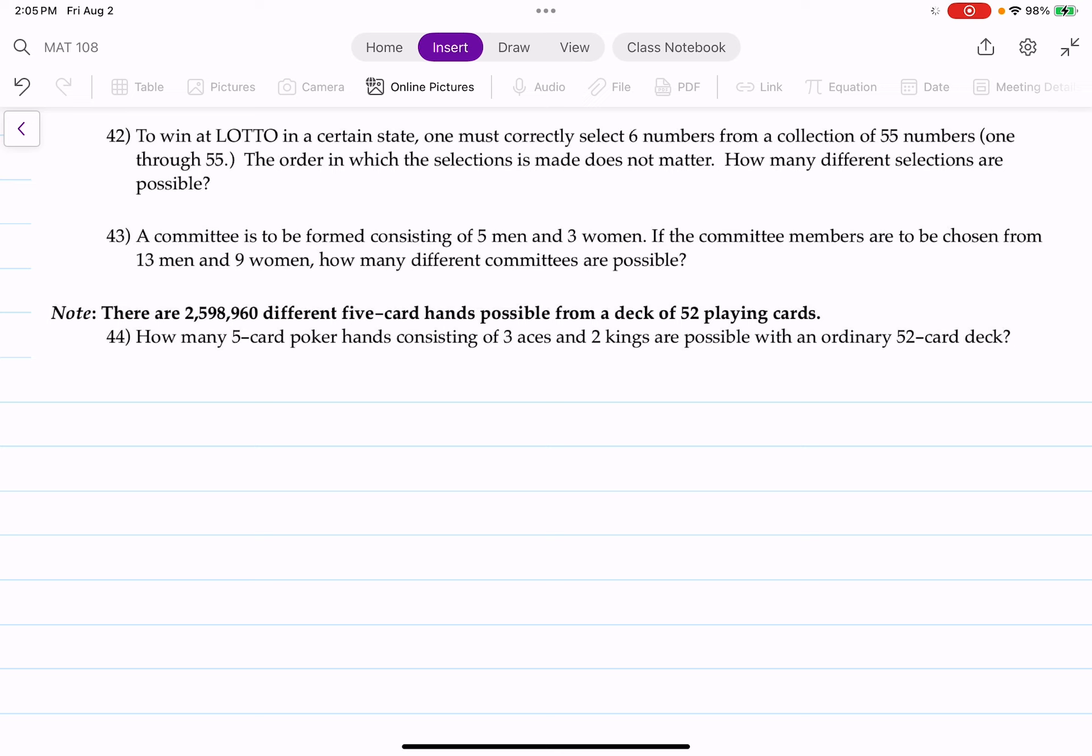The numbers are also numbered one through 55, just to put that out there. The order in which the selections is made does not matter. How many different selections are possible?